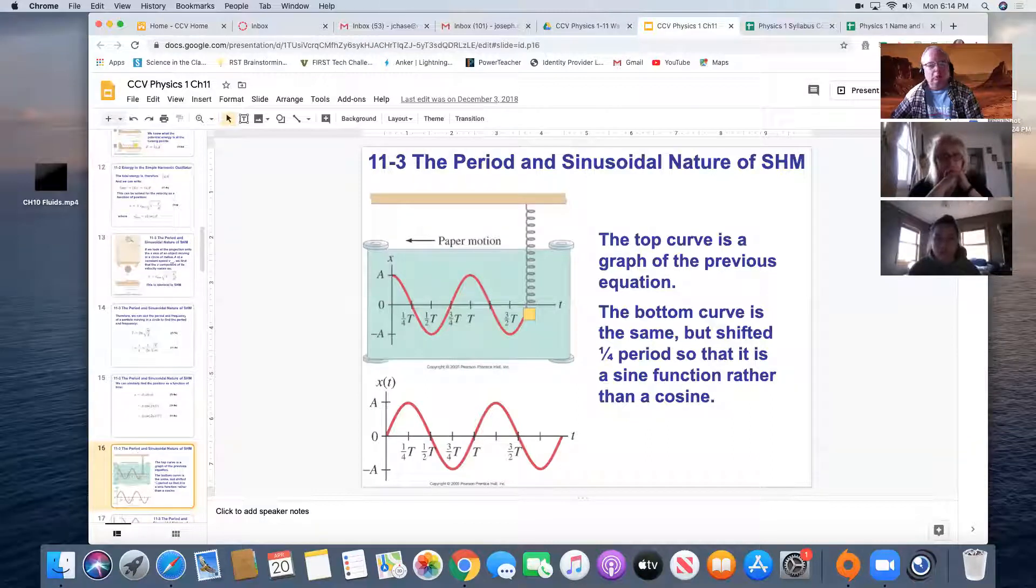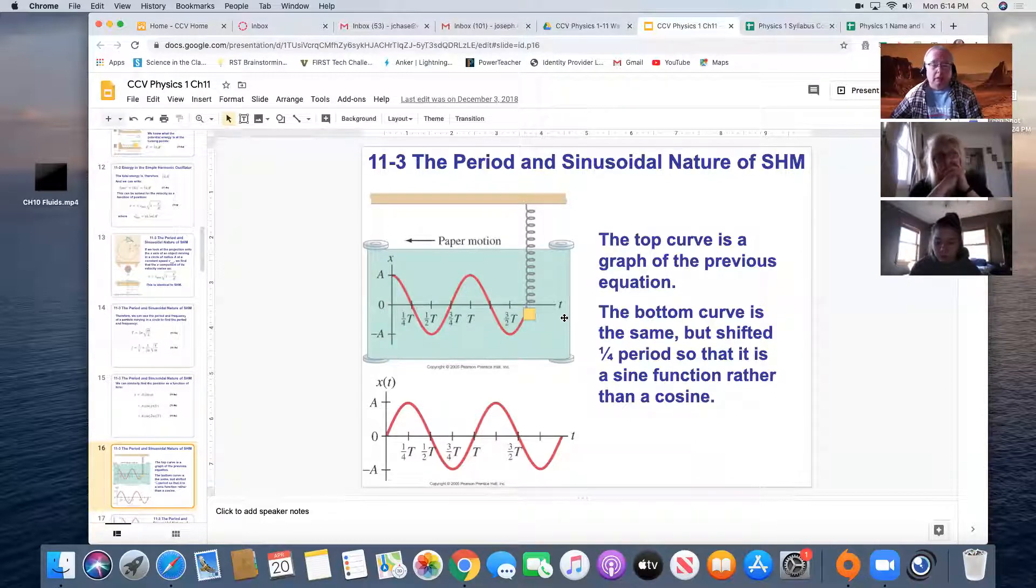If we try to plot what this looks like, you can see that the motion repeats itself. Whether we use cosine or sine, it doesn't really matter. It depends on when you started the clock. If we started the clock when the displacement was maximum, then cosine seems appropriate. But if we started the clock when the displacement was zero, then sine is more appropriate.